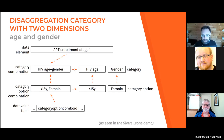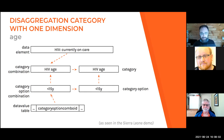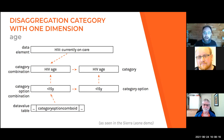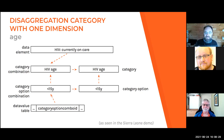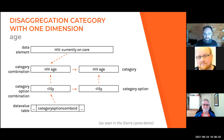With one dimension, it's similar. From the Sierra Leone demo, 'HIV currently on care' is attached to the category combination 'HIV age,' which only has one category, also named 'HIV age' — though these are two different objects in the system. That combination combines HIV age with nothing. We pick an option, 'less than 15 years old,' and the category option combination is just 'less than 15 years' — combined with nothing — and that goes into the data value table.